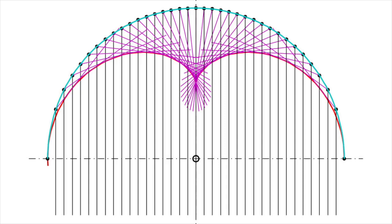A catacaustic, by the way, is just a curve formed by light reflecting from a curved surface.